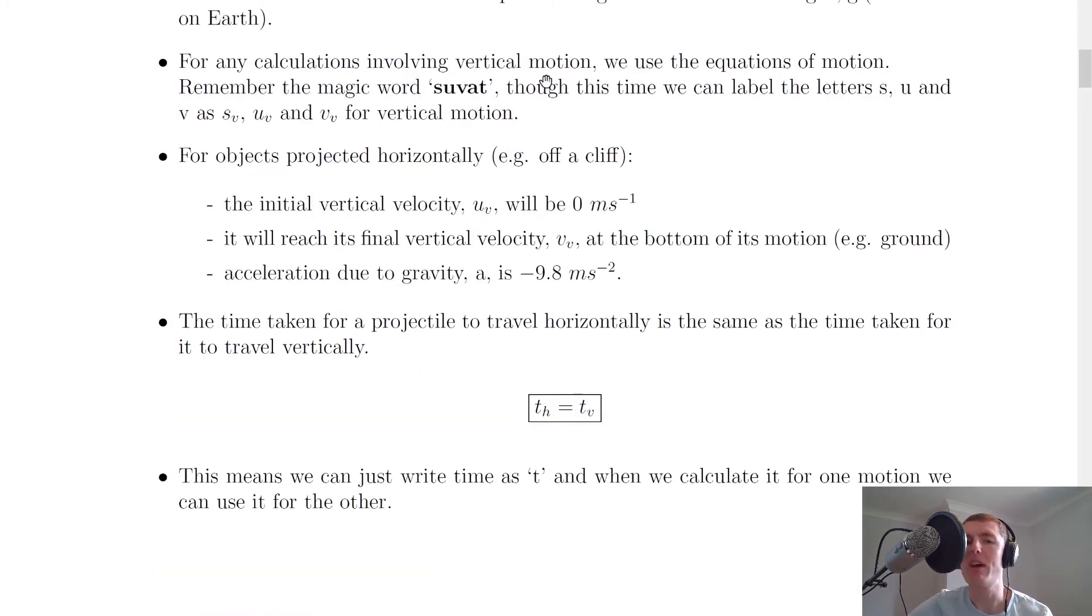For any calculations involving vertical motion, we use the equations of motion which we've seen before. Remember the magic word suvat, which we can write down first before attempting any problems. Though this time we can label the letters s, u and v as sv, uv and vv with the little subscripts of v to represent vertical motion.